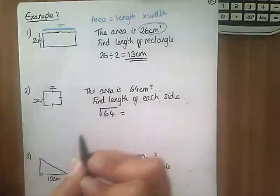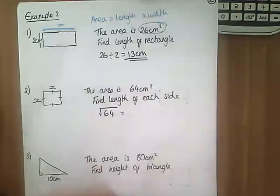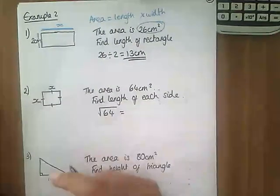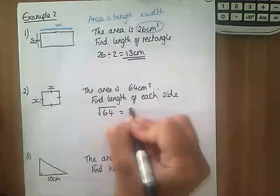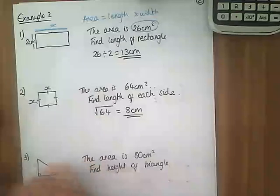In order to find the missing length here I need to do the opposite of squaring and that is to square root. I'm going to square root 64, which is asking what do I have to times by itself to give 64, and the answer is 8. So the length of each side is 8.